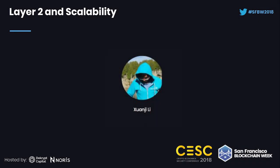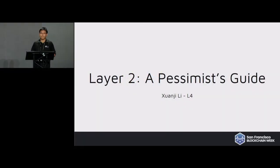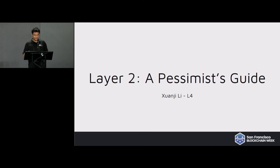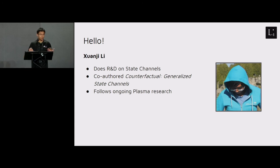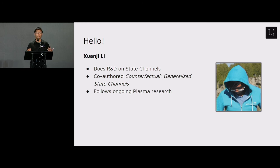Hi everyone. The title of my talk today is "Layer 2: A Pessimist's Guide." This takes some explaining. We all know that Layer 2 brings about many benefits like scalability, privacy, and latency. In my job, I work directly on this — I do research and development for a company called L4 on state channels. In March, I co-authored a paper called Counterfactual Generalized State Channels, and I also follow ongoing plasma research. So why am I giving this talk? I'm hoping to present the strongest attacks I know against Layer 2 and the tightest limits against our scalability.